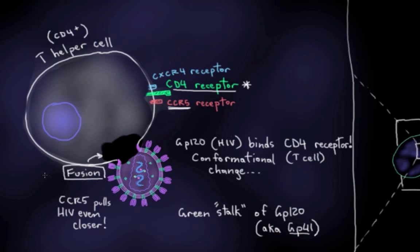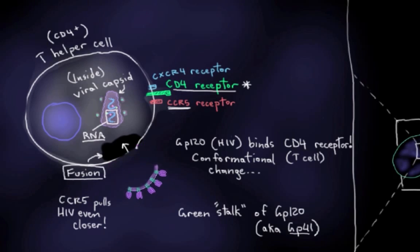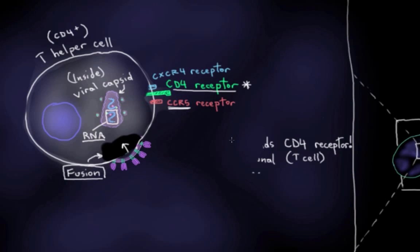This allows the HIV particle to essentially inject, now that it has access to the inside of our T cell here, it injects this genetic material into our T cell inside this viral capsid here. And that's in the form of viral RNA, ribonucleic acid. And this envelope is just left at the surface of our T cell here.